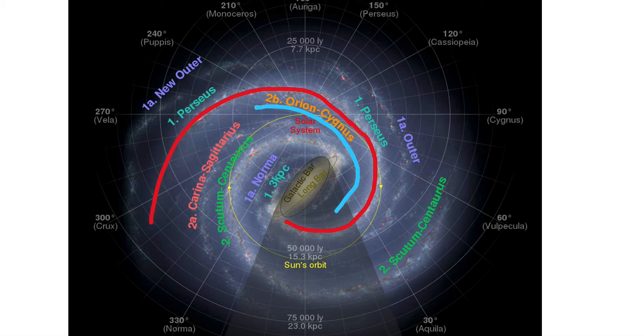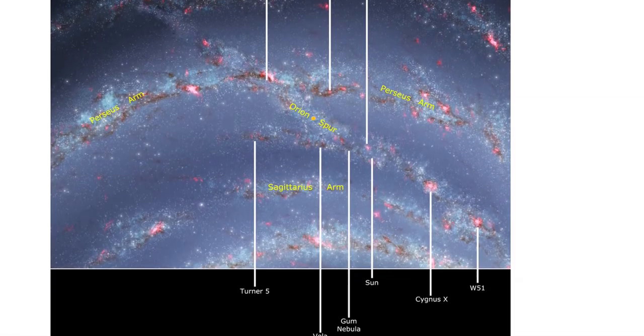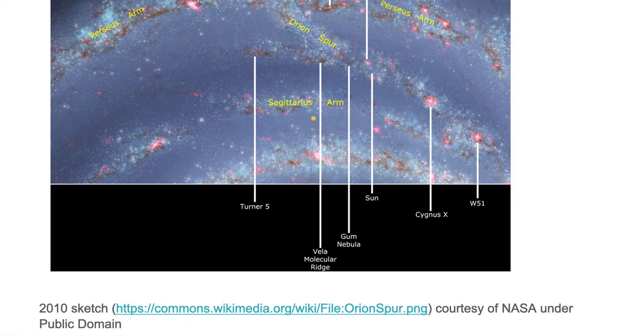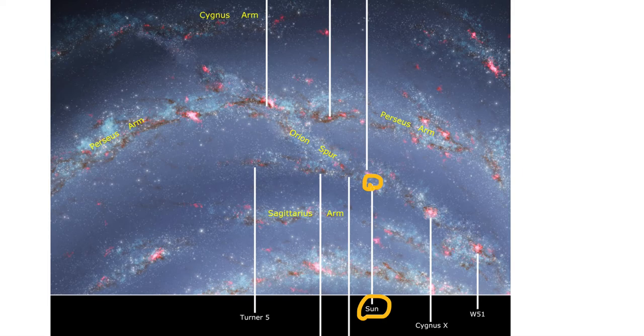Let's zoom in on this Orion Cygnus Spur that contains the solar system, which is circled in yellow. So here we're zooming in on this Orion Cygnus Spur and we're going to take a look at where the solar system is located. The solar system is located here in this Orion Cygnus Spur.